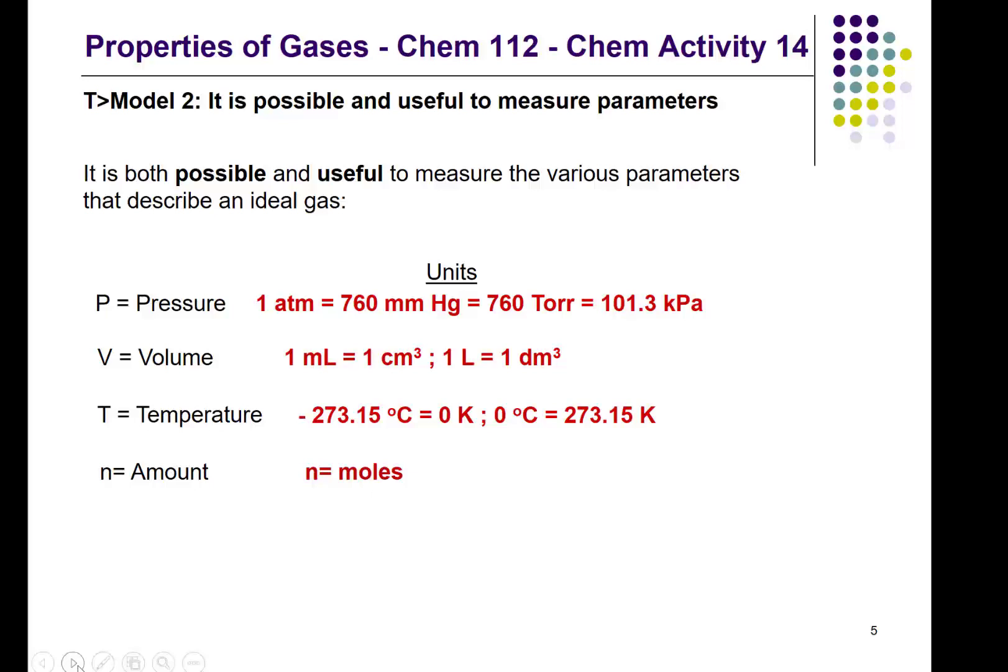So as it turns out, zero Kelvin, which is also known as absolute zero, is equal to negative 273.15 degrees Celsius. Another way of thinking about this is zero degrees Celsius is actually equal to 273.15 Kelvin.